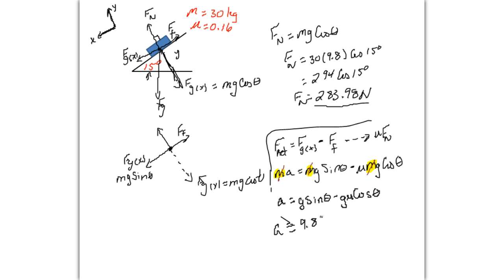So acceleration, 9.8 times sine 15 subtract, now I'll put it in the right order, mu 0.16 times 9.8 times cosine of 15 degrees. And we just need to multiply that out now. So give me a moment. Alright, so you can check the calculations, acceleration should work at 1.5 meters per second squared.